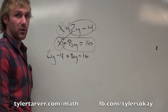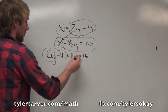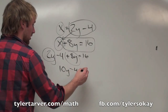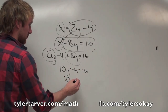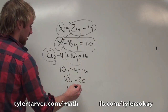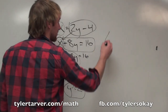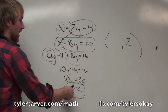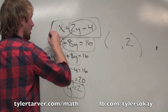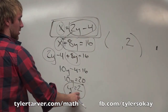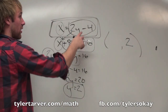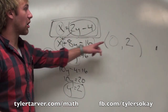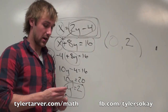Now I'm just solving multi-step equations. I can combine these two: 2y plus 8y is 10y, still got my minus 4. Add 4 to both sides, then divide by 10 — I've got my y equals 2. To find x, plug that into either equation. I think the first one is easier: plug in 2 for y — what's 2 times 2? 4. Then 4 minus 4 is 0. So these two lines cross at the coordinate (0, 2).